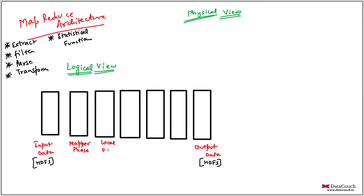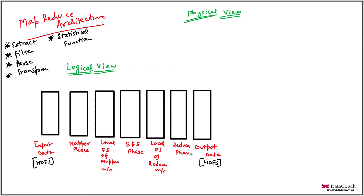This is the mapper phase and this one is the local file system of the mapper machine. This one is the shuffle and sort phase. This particular thing is the local file system of the reducer machine, and this particular phase is the reducer phase. There are multiple stages here and each stage has a certain role to play.